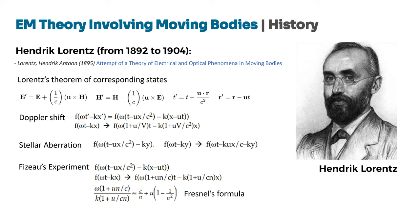Lorentz's transformations also explained stellar aberration — the apparent shift in the position of stars due to the motion of the observer or the Earth — by modifying the observed direction of incoming light. They also accounted for Fizeau's experiment, which measured the speed of light in moving water. Using his transformations, Lorentz successfully derived the resulting effect on light's velocity, thereby supporting the predictions of Maxwell's electrodynamics. Lorentz's theorem of corresponding states introduced transformations where E and H represent the electric and magnetic fields, U is the velocity vector, C is the speed of light, and T and R are the time and spatial coordinates, respectively.